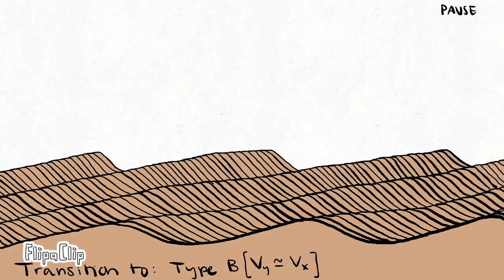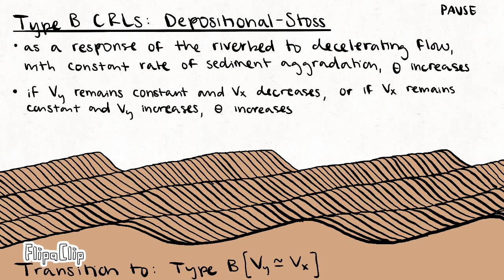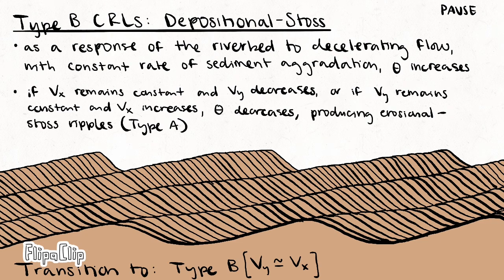Next are type B climbing ripples, or depositional stoss, which form as a response of the riverbed to decelerating flow with a relatively constant rate of aggregation. Theta, the angle of climb, is this response. If aggregation remains constant and migration decreases, or if migration remains constant and aggregation increases, theta increases, producing type B ripples.